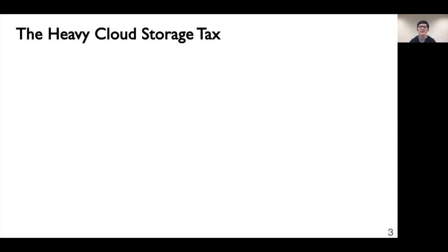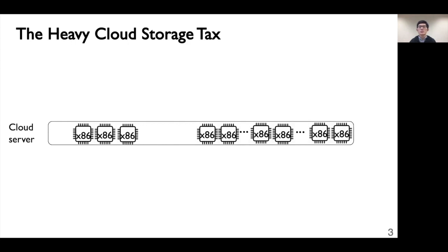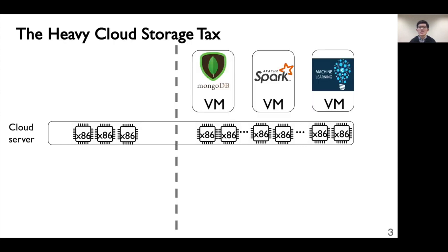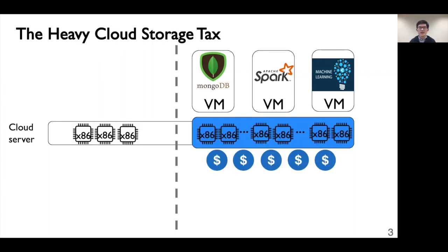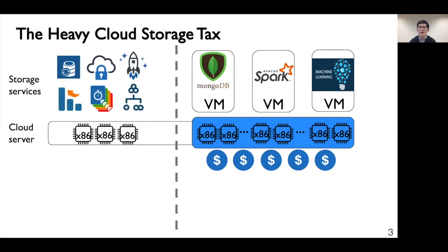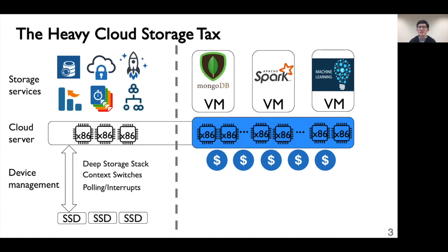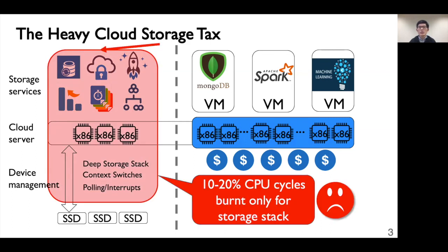Today's cloud storage stack is very complex and imposes very heavy operational costs. The servers in data centers provide a large array of x86 cores. Most of the CPUs are rented to users and used to run various types of user workloads such as NoSQL databases, analytics, and machine learning. Cloud providers charge users for the amount of computational resources used, proportional to the number of cores. However, the storage stack takes away some precious cores — many storage services require a lot of CPU resources, and device management also incurs a lot of CPU overhead. All these form the cloud storage tax. About 10 to 20 percent of data center x86 cores are spent to run the storage stack only.